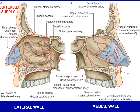You should be able to remember Little's area, Kiesselbach's plexus, how it is formed, its importance, and the arterial supply of the nasal septum. The lateral wall of the nose is supplied by: anterosuperiorly by the anterior ethmoidal artery; anteroinferiorly by the lateral nasal branch of the facial artery and the greater palatine artery; posterosuperiorly by the posterior ethmoidal artery and the sphenopalatine artery; and posteroinferiorly by the lateral nasal branches of the sphenopalatine artery.